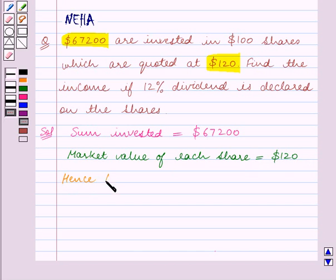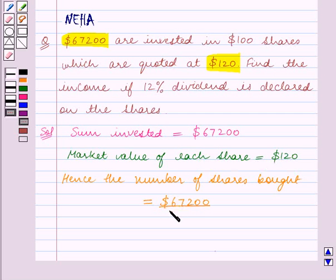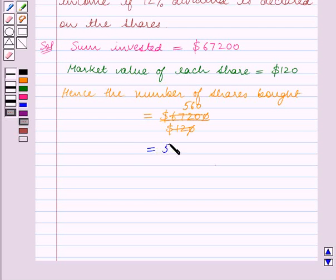Hence the number of shares bought is equal to the total sum invested which is $67,200 divided by the market value of each share which is $120. The zeros get cancelled and this is equal to 560 shares.